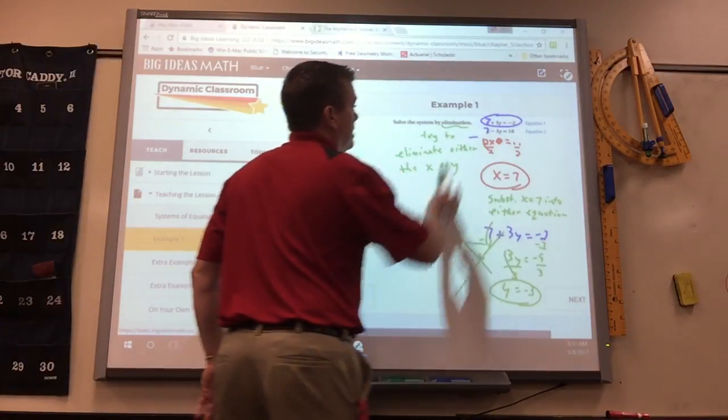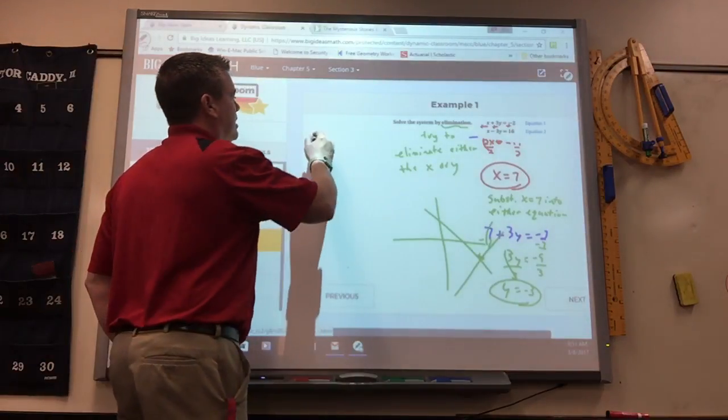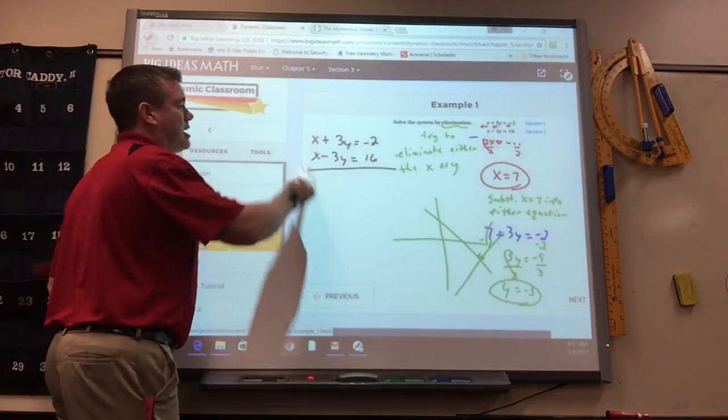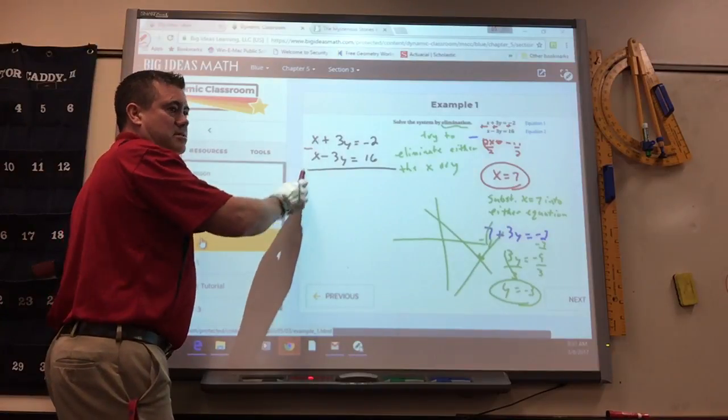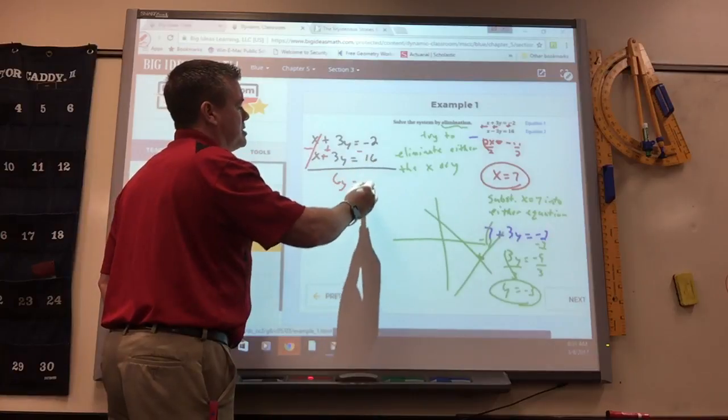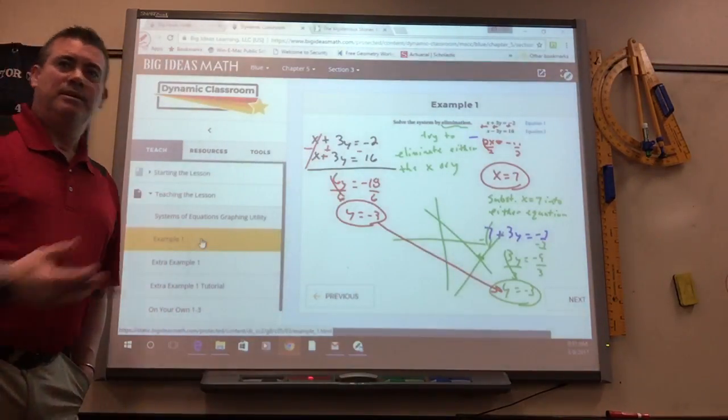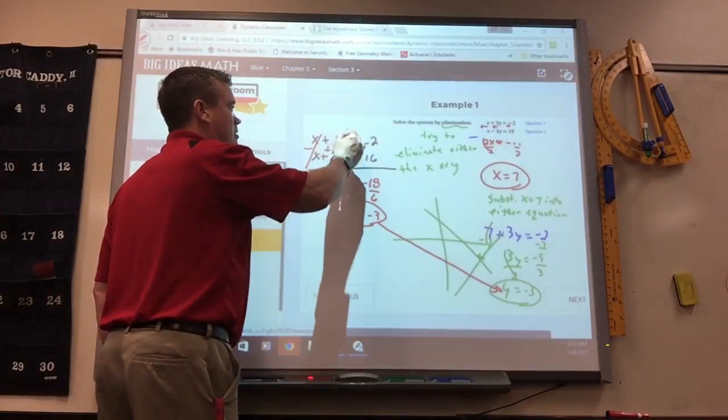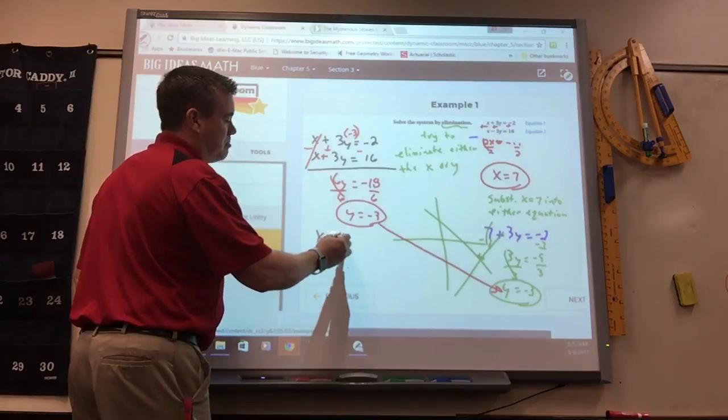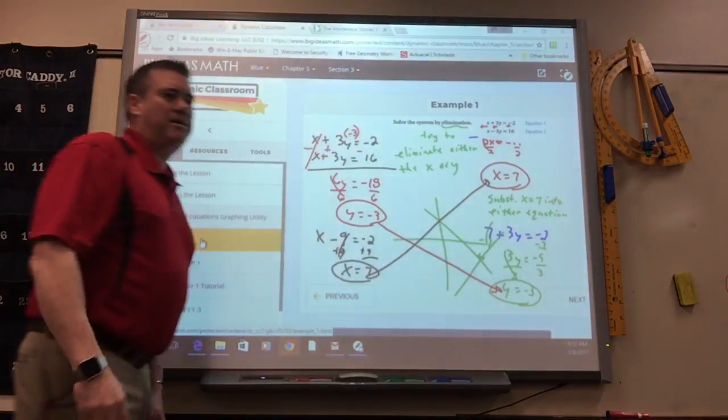Now I showed you that we added in order to figure that out. Sometimes you can do either one, not always. This one you could have done either one. What I could have done is I could have subtracted and that would have eliminated the x's. X minus x cancels. 3 take away negative 3 is 6y. Negative 2 take away 16 is negative 18. Divide by 6 and we get the same answer as what we did there for y. Now we would have to plug this in either there or there to figure out what x is. So if you rewrote it, it would be x, 3 times negative 3 is minus 9 equals negative 2. So we'd add 9 and you get x equals 7.